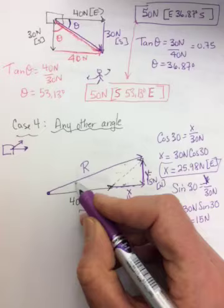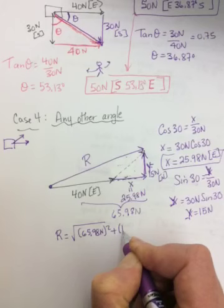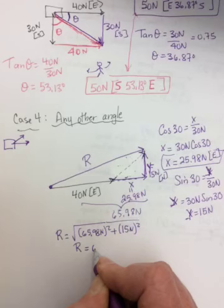So now we can square them, add them together, and find the square root. It'll be 65.98 Newtons squared plus 15 Newtons squared and take the square root. When you do that, you get a resultant of 67.66 Newtons.